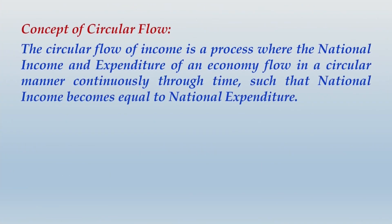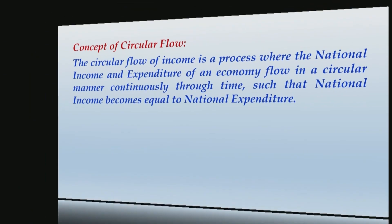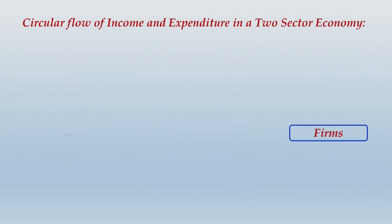Now let us write some notes. The concept of circular flow: the circular flow of income is a process where the national income and expenditure of an economy flow in a circular manner continuously through time, such that national income becomes equal to national expenditure. We then write about the circular flow of income and expenditure in a two-sector economy — the two sectors being households and firms (the business sector).